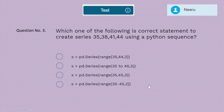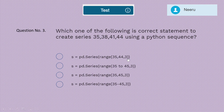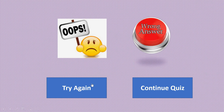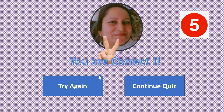Question 3: Which of the following is the correct statement to create the series 35, 38, 41, 44 using a Python sequence? The options are: pd.Series(range(35, 44, 3)), pd.Series(range(35, 45, 3)), pd.Series(range(35-45, 3)), or pd.Series(range(35-45, 3)). The correct answer is the second option — pd.Series(range(35, 45, 3)). Give yourself five marks for that.